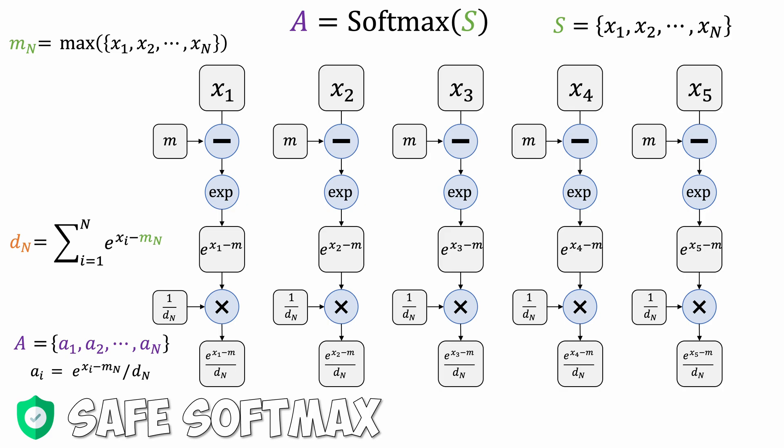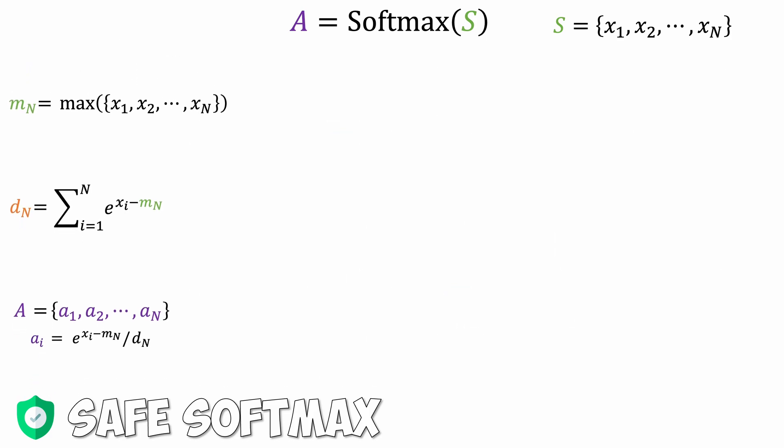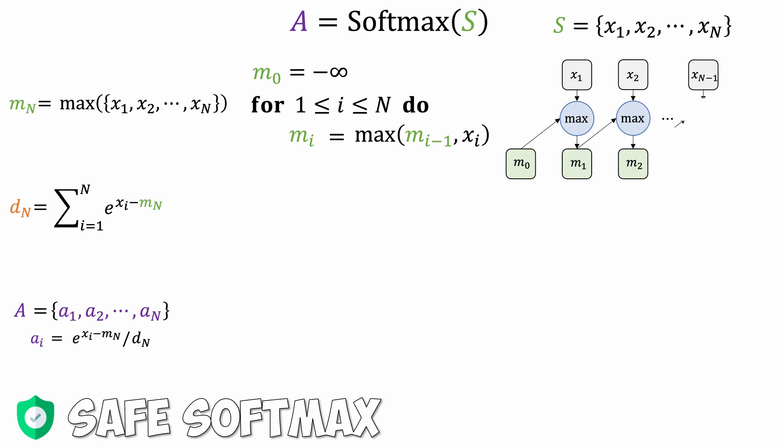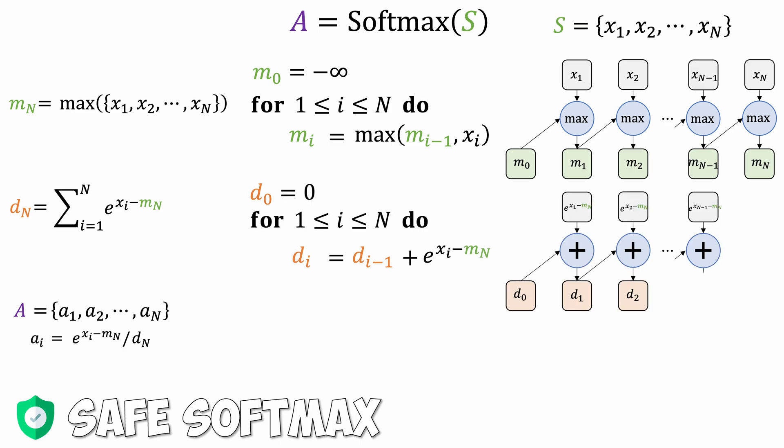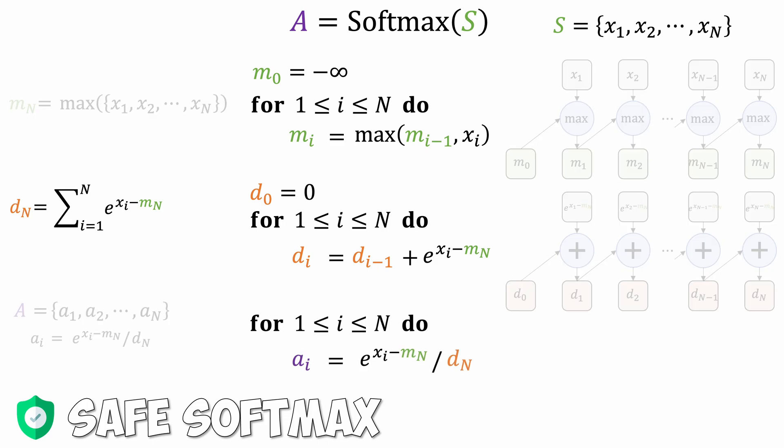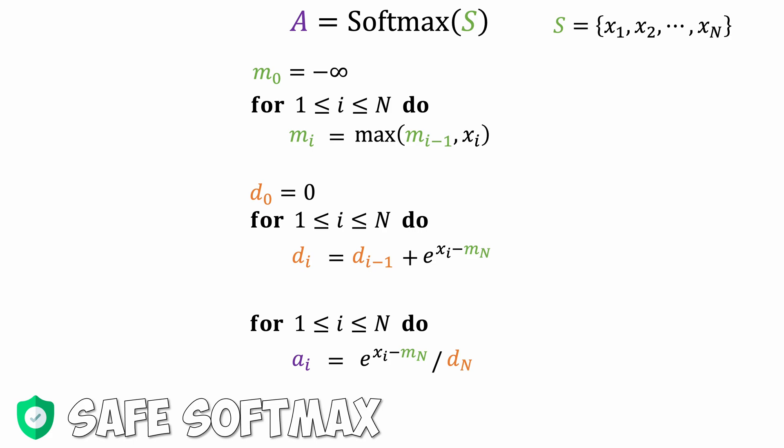So how do we implement safe softmax? Essentially, it requires 3 passes of the sequence S. The first pass finds the maximum value in the sequence, we call it mN here. In the second pass, we compute the sum of the exponential values. Finally, we normalize the exponential value to obtain the attention weights summing up to 1. This is very IO inefficient because the algorithm requires iterating the sequence 3 times.